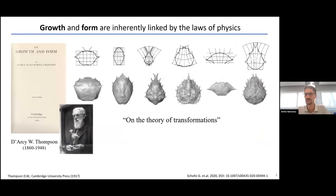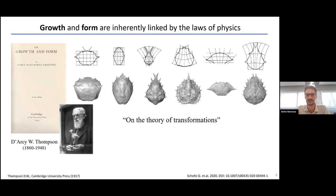Over a hundred years ago, in the beautiful work from D'Arcy Thompson on growth and form, Thompson laid the basis for the fact that growth and form are inherently linked by physical laws. In the last chapter of his book, called 'On the Theory of Transformations,' he suggested that morphologically related structures could be transformed by simple mathematical operations. You can see carcasses of different crop species overlaid by a grid — if you stress, shear, or deform this grid, you can transform one shape into a related shape.